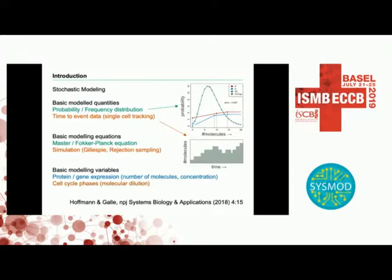The modeling equations are basically the master equation or the Fokker-Planck equation for one case, and simulation by Gillespie or rejection sampling or other algorithms in the other case. What we model as a basic variable is protein and gene expression — either the number of molecules for the master equation, or the concentration when we calculate rates, because they are framed in concentrations. For concentrations, you would need a volume, and therefore I'm also modeling cell cycle phases to have the effect of molecular dilution.